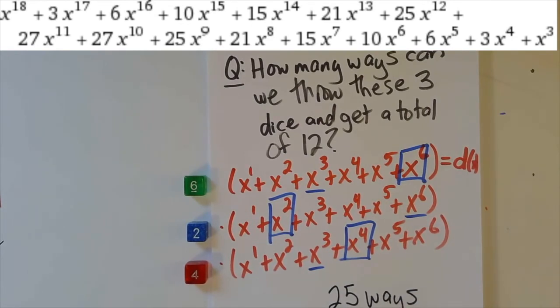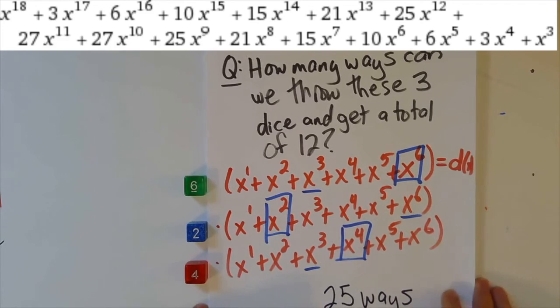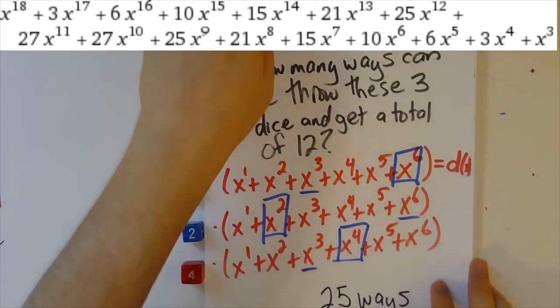So make sure you're happy with this. And make sure you also understand that, for example, if we wanted to know how many ways there were to throw these three dice and get a total of eight, that that would be 21, which you would get by reading off the coefficient of x to the eighth.